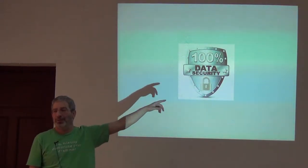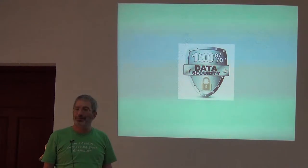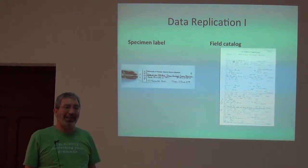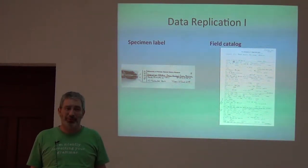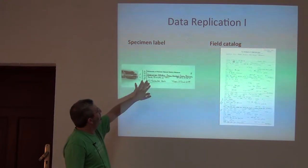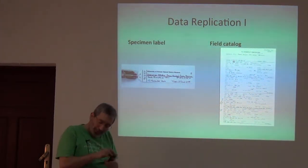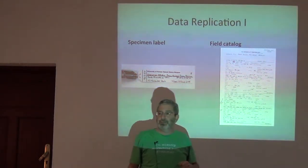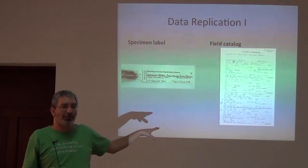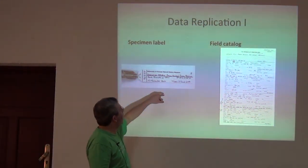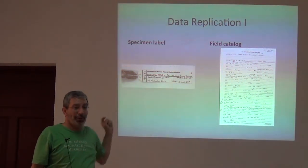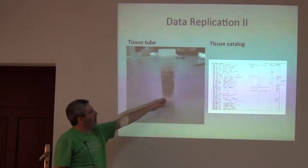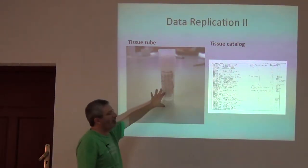Basically, the concept of 100% data security does not exist — it doesn't work. What we do to try to get to that 100% data security is replication. Here's the label on a specimen tag, and we're going to sit there writing that out. Here's our field catalog, and we're going to write the same information in both places. And when Mark is cataloging these specimens back in Kansas, if he finds that you didn't write down the latitude-longitude in either place, he will criticize. Same thing for tissues — there's the tissue tube and there's a tissue catalog, and much the same information goes on both.